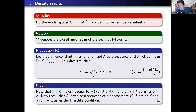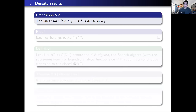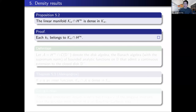This is an elementary result, but it's actually quite useful. It tells us, for example, that the linear manifold K_U intersect H∞ is dense in the model space. For each fixed lambda, the reproducing kernel k_lambda is an H∞ function, and we've seen that the span of selected kernels is dense in the model space. So at least we know that the intersection of the model space with H∞ is dense in the model space, but we want to do a lot better than that — we want some sort of smoothness.